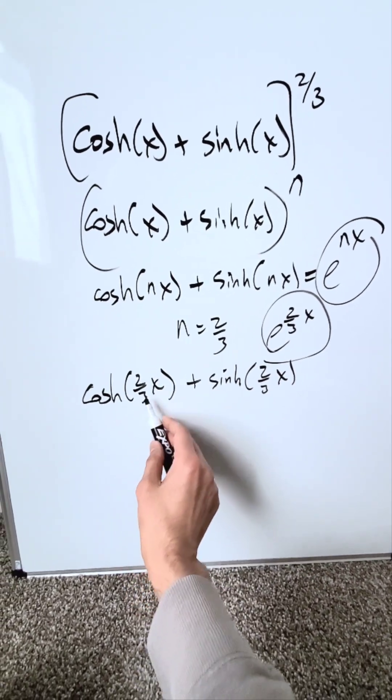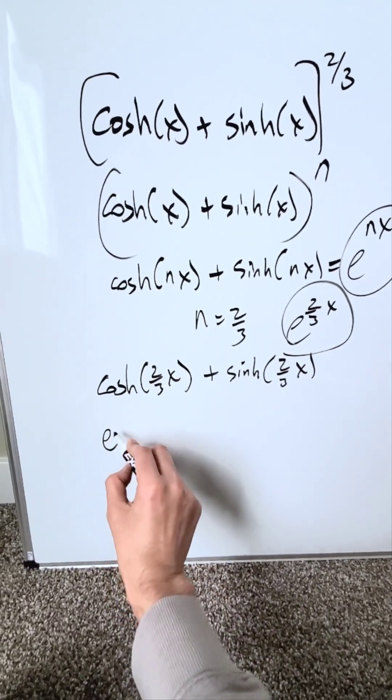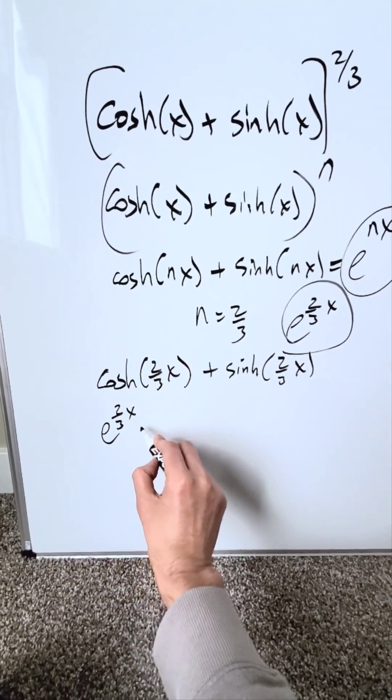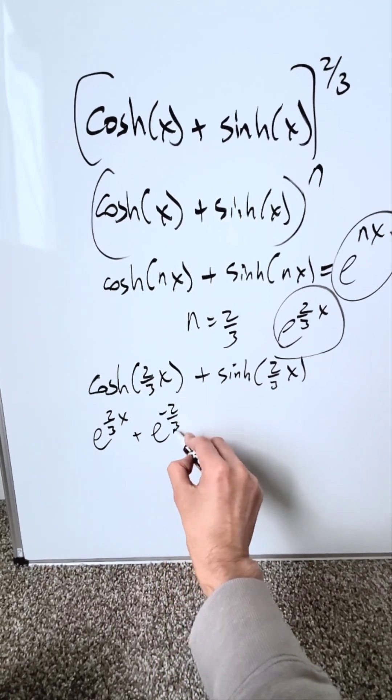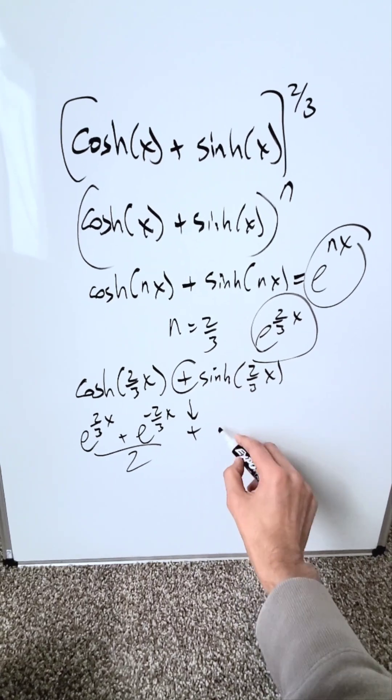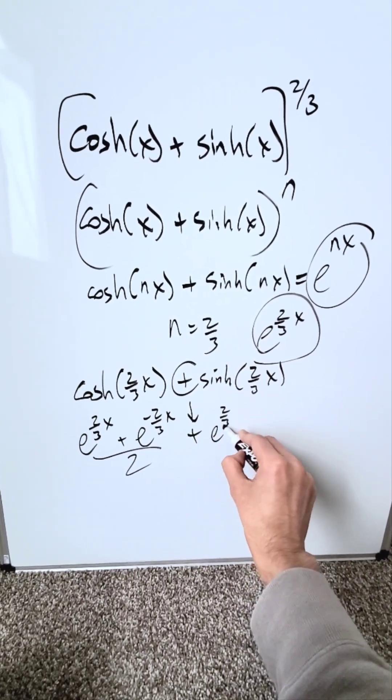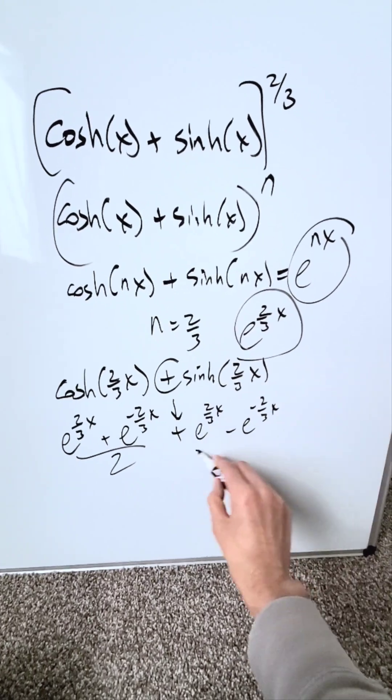So how would you evaluate it? You'd run the 2 over 3 into the basic definitions of both of these. I will have e to the power of 2 over 3x plus, this for hyperbolic cosine, e to the power of minus 2 over 3x divided by 2. This plus, the definition of hyperbolic sine, e to the power of 2 over 3x minus e to the power of minus 2 over 3x over 2.